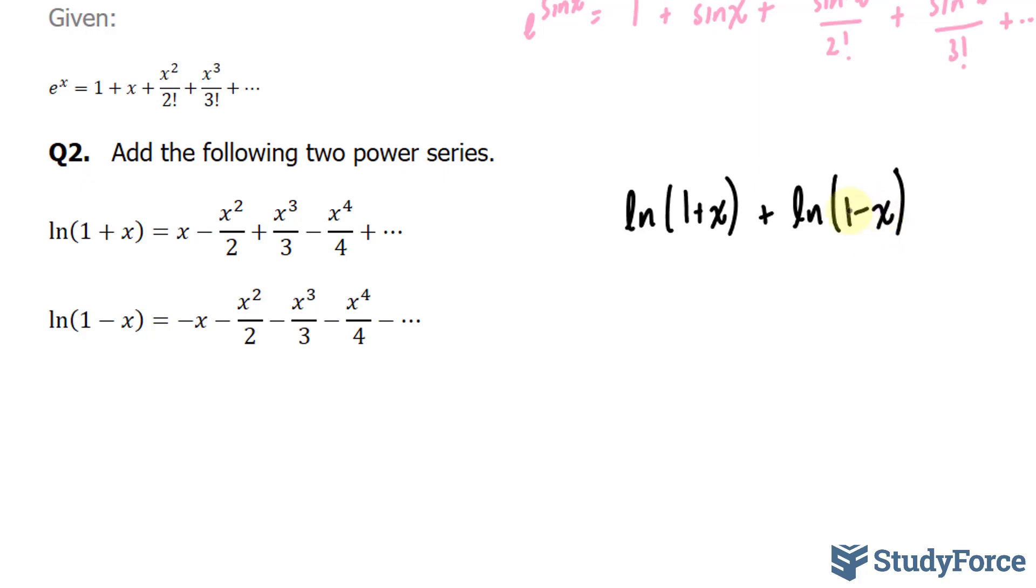And remember, when it comes to logs, one of the rules is that if you have two logs of the same base, ln represents log to the base of e, then you can multiply these together. So we have ln all combined to (1 + x)(1 - x). And if we continue to expand this, we'll end up with 1 minus x plus x minus x squared, ln(1 - x²).